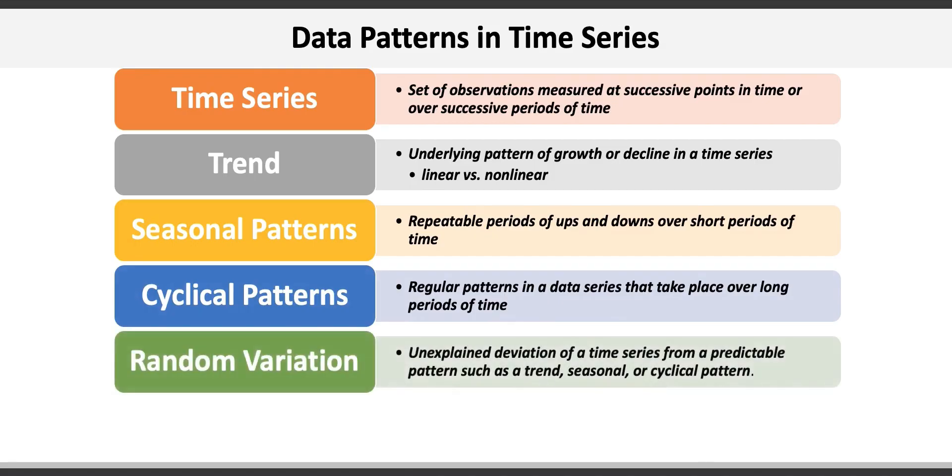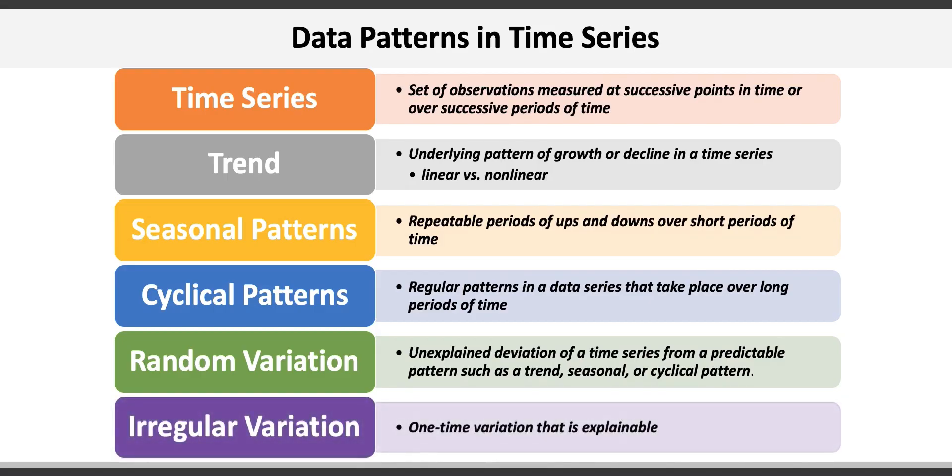Sometimes sales of products follow a completely unexplained deviation from a predictable pattern resulting in random variation. Here the data is usually a mess which makes forecasting very difficult, whereas identifiable trends, seasonal patterns and cyclical patterns make forecasting easier. Finally, there's irregular variation in sales data which is a one-time explainable event. We sometimes call these outliers. For example, an unseasonably warm day in December can cause an unexpected spike in frappuccino sales at Starbucks.